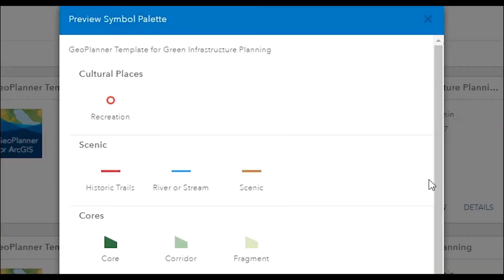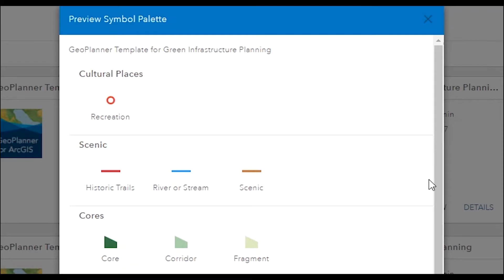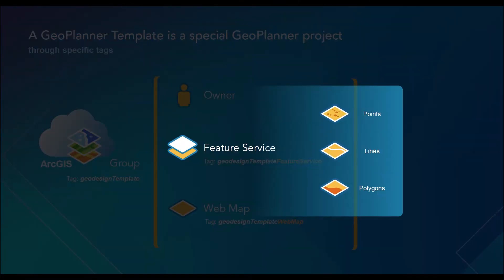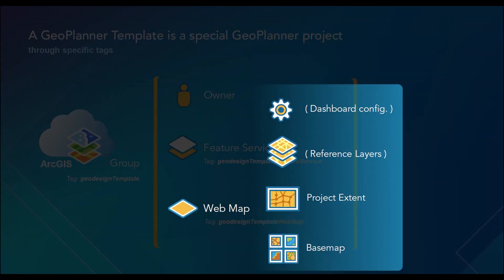Points, lines, and polygons are parts of the feature service defined by the template. The other component of a template is a web map. It contains the project map extent, base map style, and dashboard configurations.